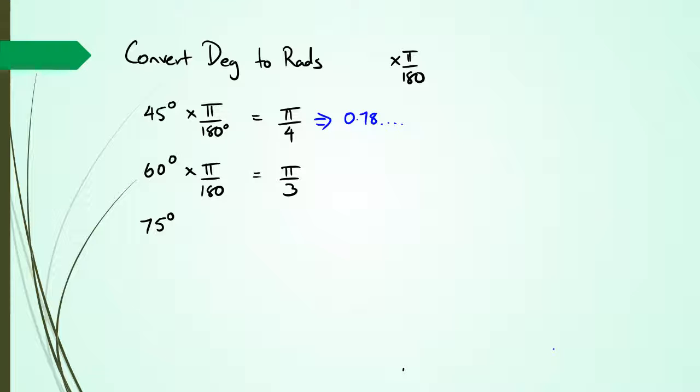When we have something like 75 degrees and you want to convert it to radians, what you really should do is just simplify 75 over 180 and see what happens. Because when you simplify 75 over 180 you get 5 over 12, which means this is going to be 5 pi over 12 radians.